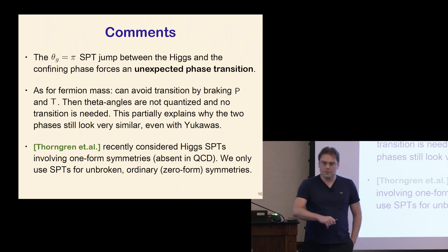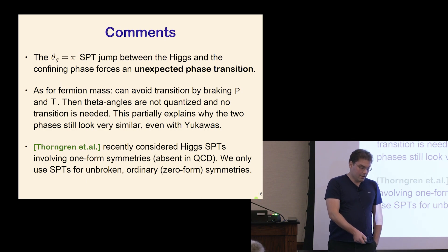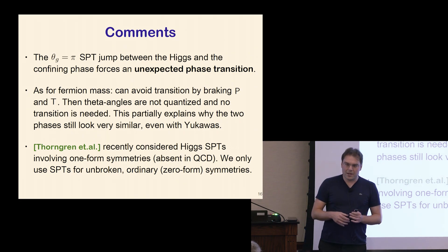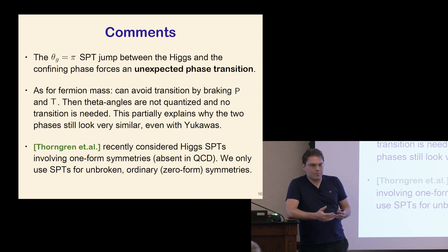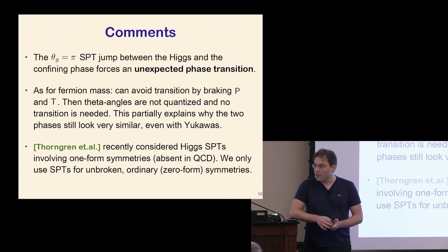This is standard for SPT-enforced transitions. Just like for the fermion mass, time reversal is absolutely crucial — if you break it by allowing the Yukawas to be complex, you can go around the transition in the complex plane and avoid it. This goes a long way to explaining why these two phases still look very similar, even though there's a phase transition between them — people have spent a lot of time pointing out the similarities. Unless you have a good reason to insist on time reversal symmetry, these phase transitions shouldn't bother you too much.